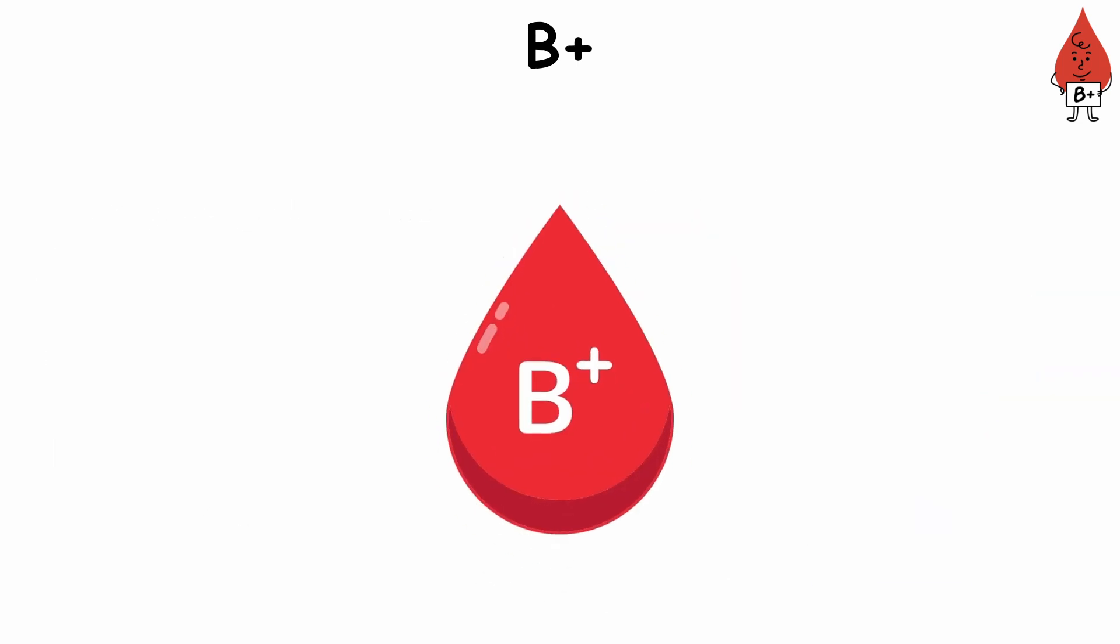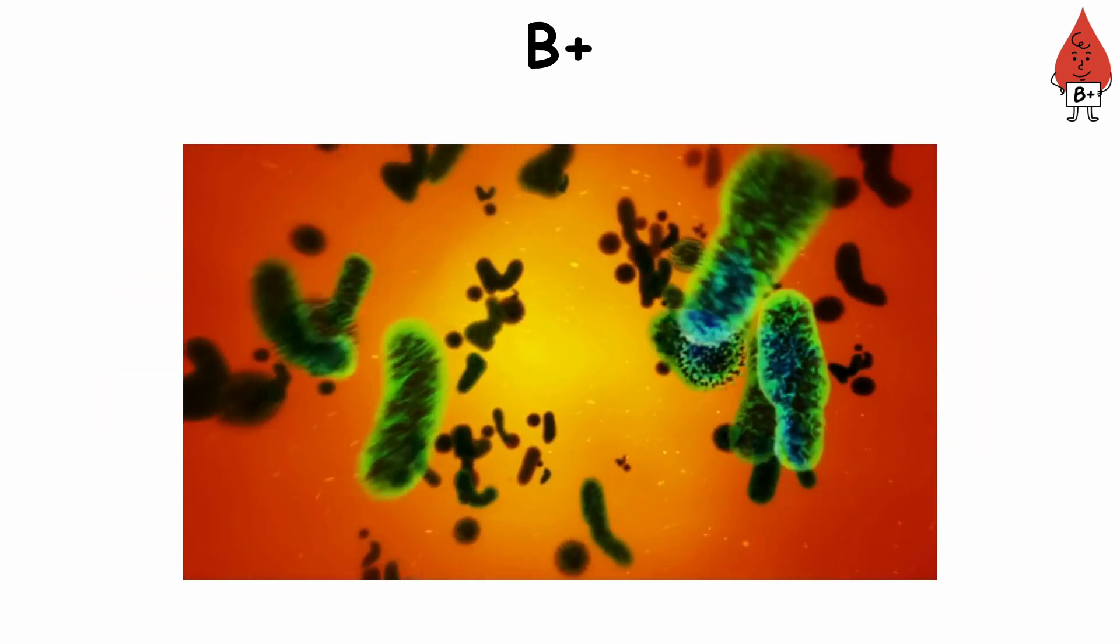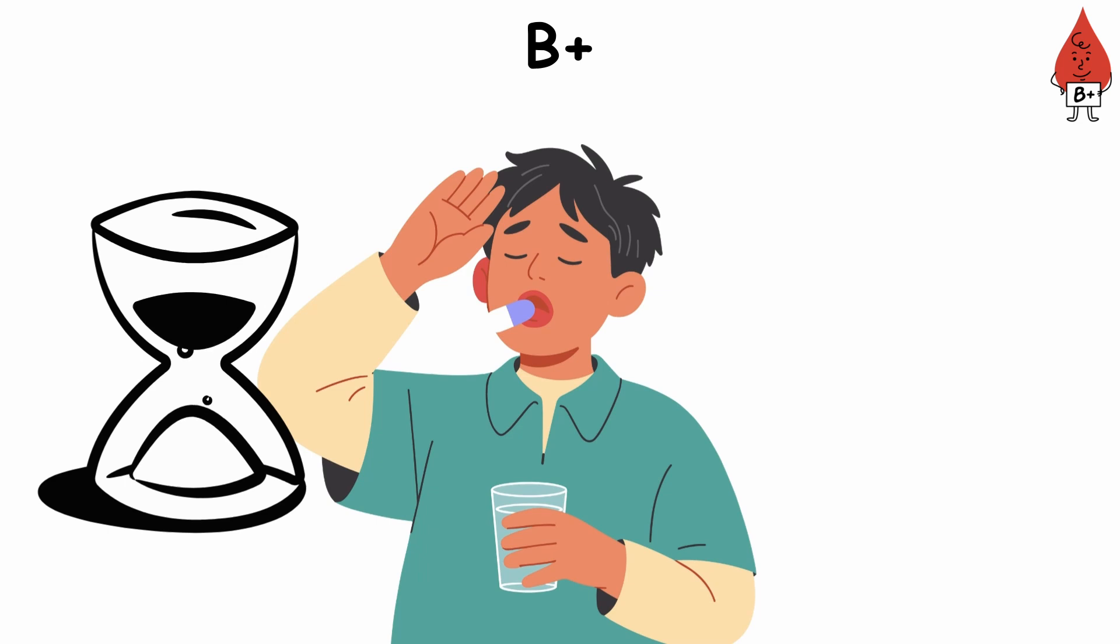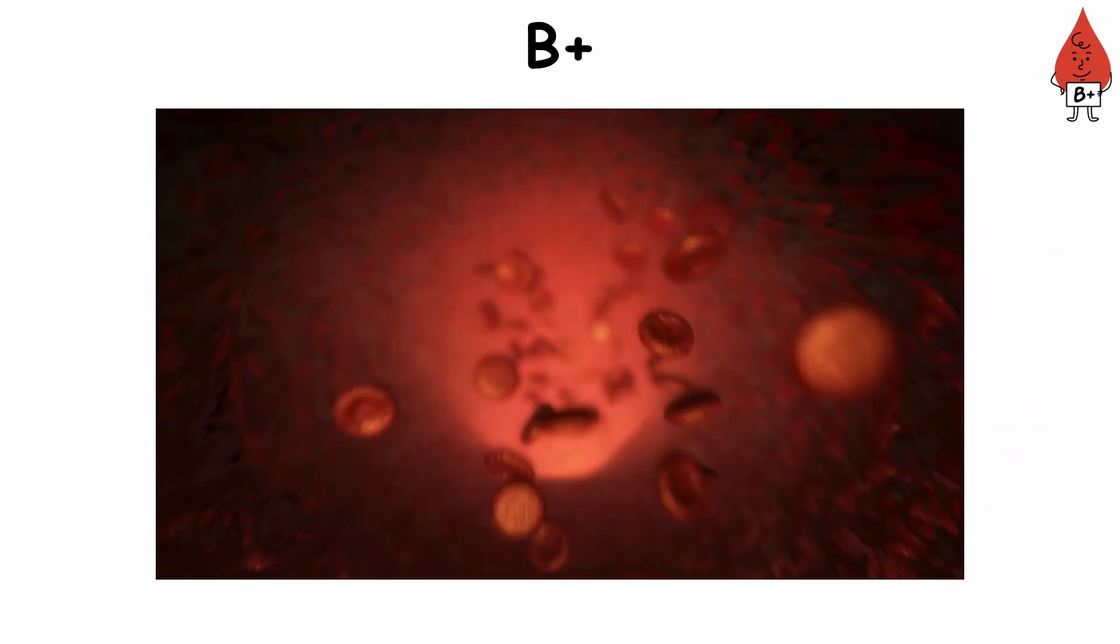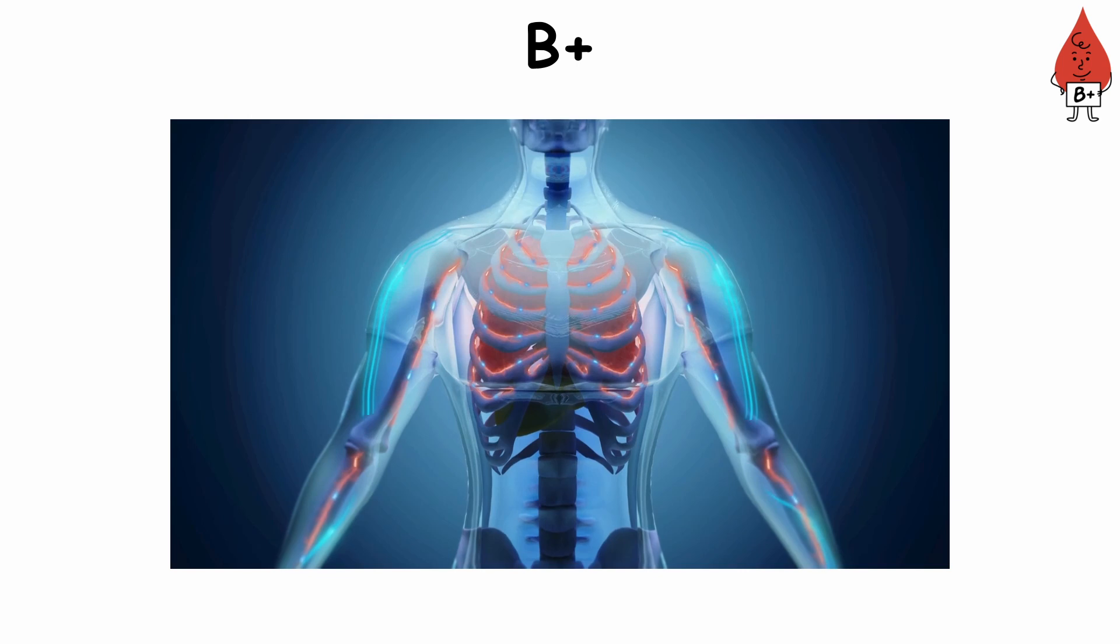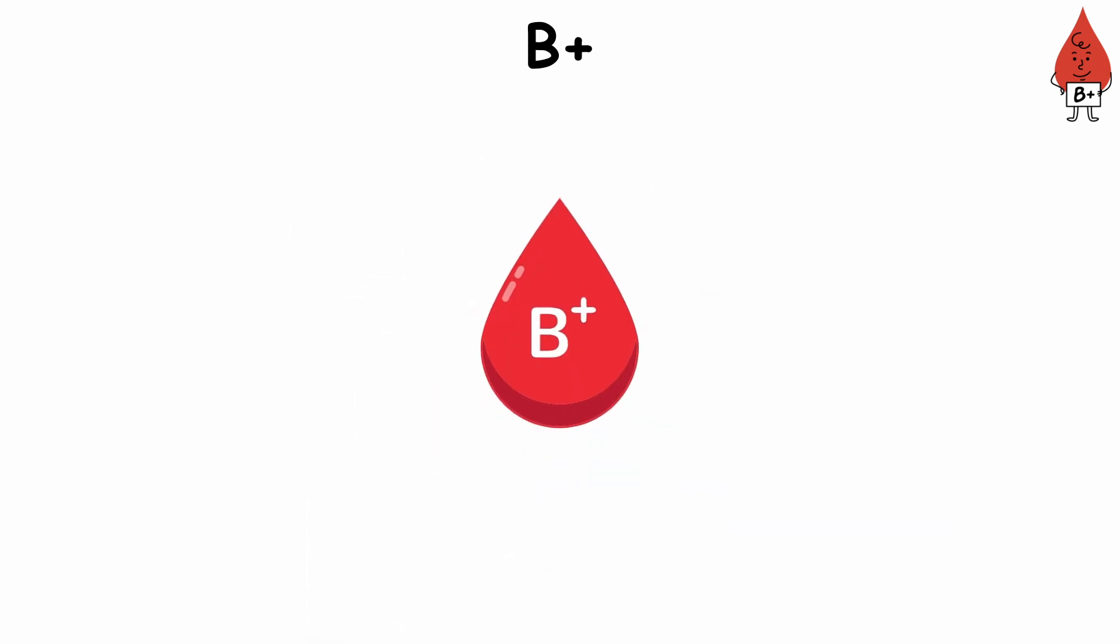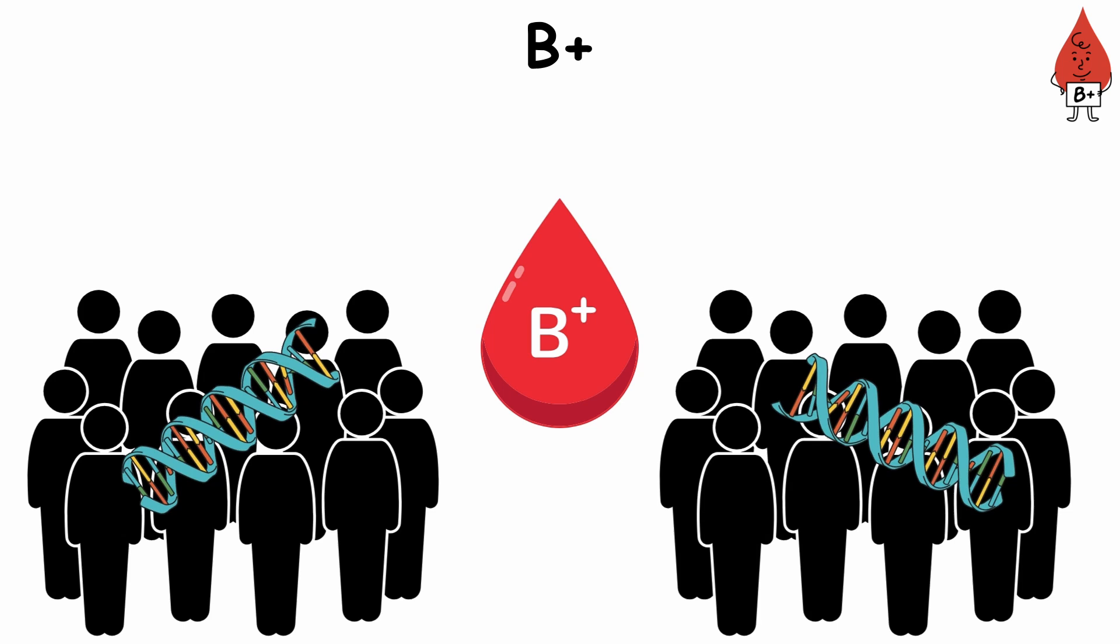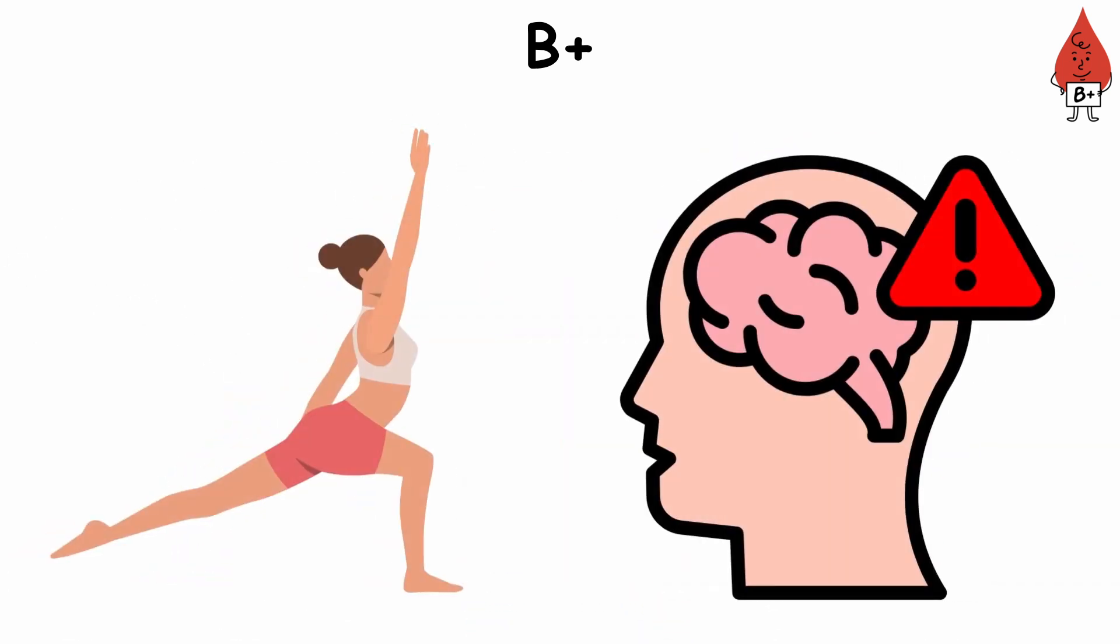B-positive blood also backs up a strong immune system, helping your body fight off infections in an efficient way, often leading to shorter periods of illness and faster comeback times. This blood type supports effective nutrient absorption and ensures your body gets the most benefit from the food you eat. Basically, B-positive people inherit a cool set of advantages that keep them energetic, tough, flexible, and mentally alert.